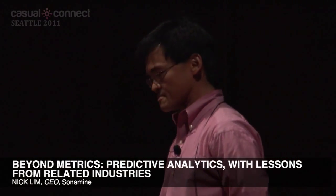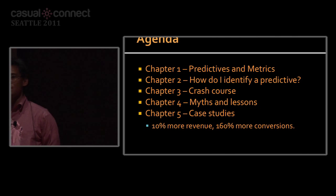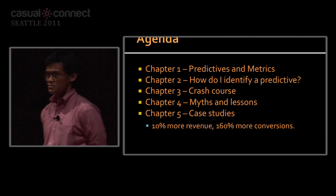We're going to cover a few sections, organized as chapters. I'll start with a quick introduction, then move on to the difference between predictives and metrics — what they are and how you identify them. We'll go through a quick crash course on terminology, some myths and lessons, and then look at three case studies: two game developers, one from Korea and one from the Netherlands. You should stick around for the case studies.